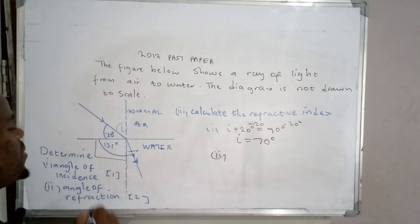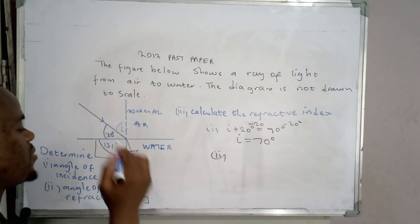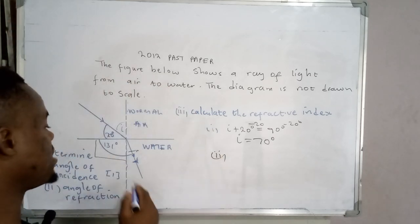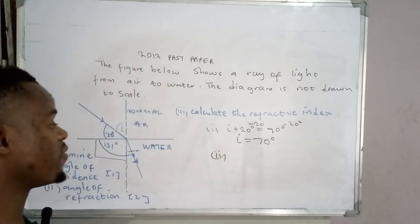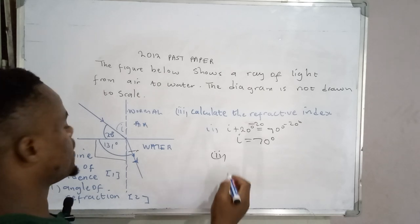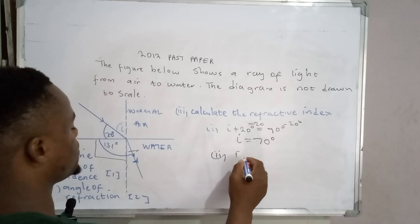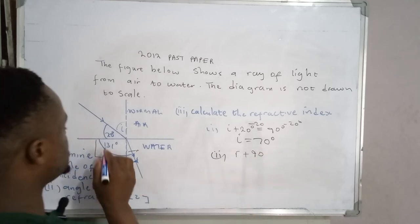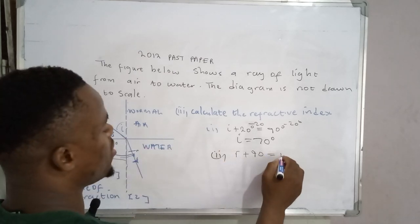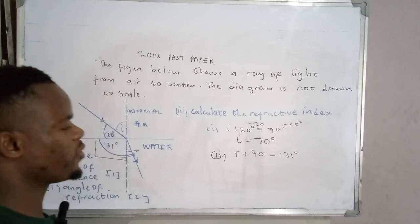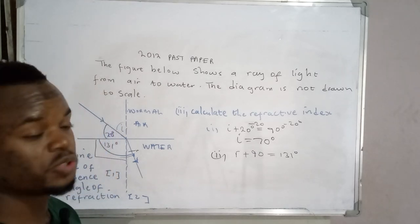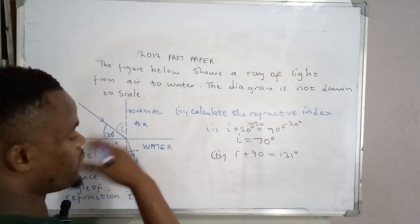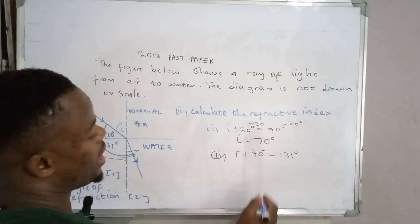So if this one is 90, then they have also added that one, which is the angle of refraction. How then do we determine the size of this angle, which is the angle of refraction? I'm going to say angle of refraction plus 90 degrees should give us the entire angle, which we've been given, which is 131 degrees. So you have to have knowledge of trigonometry and the four quadrants to be able to solve this. So how then do we resolve the value of r?